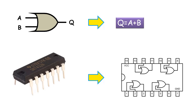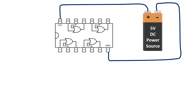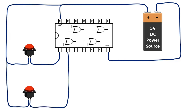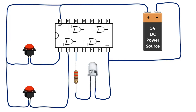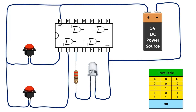Let's look at how this logic gate works. First, let's feed the positive and negative of the IC with the DC power supply. The first and second pins of this IC are the inputs of the OR gate. Let's connect the buttons to give logic 1 to these inputs from our 5V DC power supply, and connect an LED so that we can see the output value. When we look at the truth table, if both inputs are 0, the output is 0 — the LED will not light when both buttons are off.